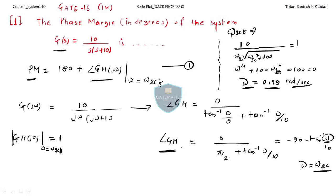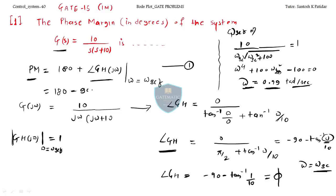Now put this ω into the phase equation. The phase becomes minus 90 minus tan⁻¹(0.99/10), which is approximately tan⁻¹(1/10). Substituting into the phase margin formula — 180 plus angle — you get 84 degrees. This is our phase margin.